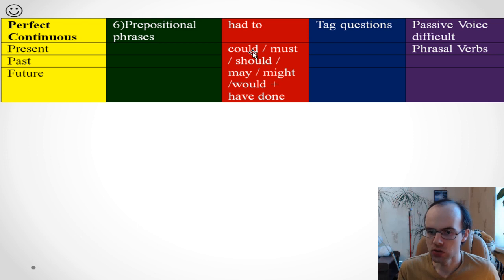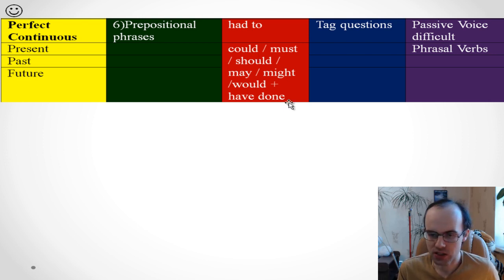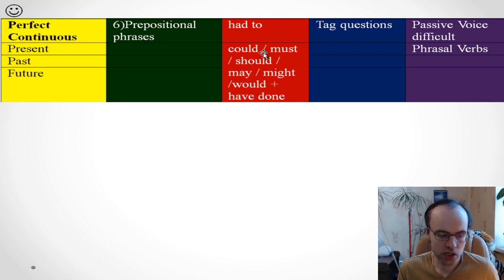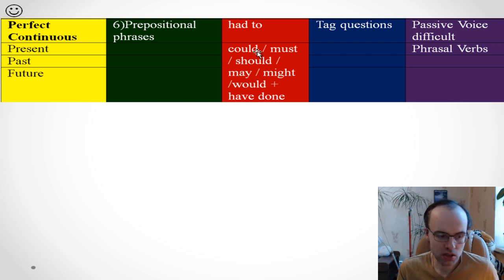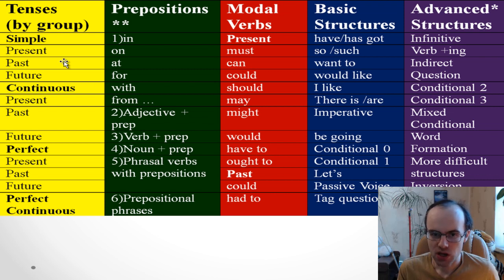Similarly: 'You could have called here yesterday' — this means it was possible but it didn't happen. Compare: 'You could call here yesterday' leaves it ambiguous whether it happened. 'You could have called' clearly means it didn't happen. Pay attention to modal verbs.